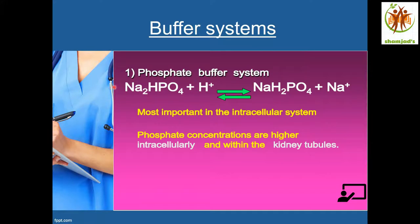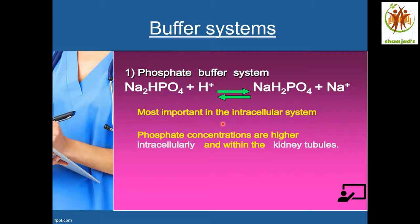Phosphate buffer system: if the H+ ion concentration is high in the blood — acidosis — disodium phosphate binds with the H+ ion, forming sodium dihydrophosphate plus sodium, and vice versa. This system is most important in the intracellular system, as phosphate concentrations are higher inside the cell and kidney tubules.